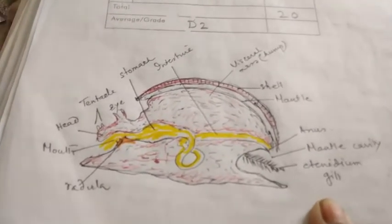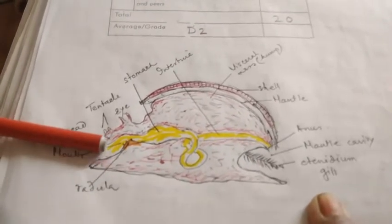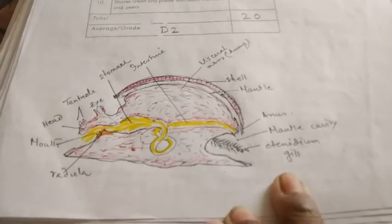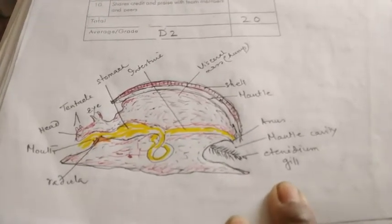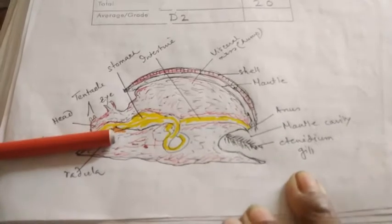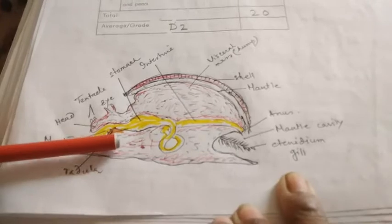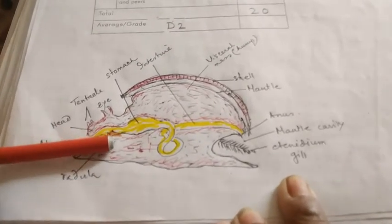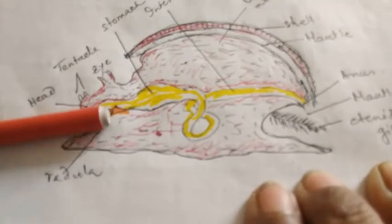Now digestive tract, you can see here it opens in the mouth and ends, it's a complete digestive tract. This mouth contains a very unique feature, a rasping organ called radula. You can see here the opening of the mouth which contains a rasping organ called radula with chitinous teeth. This radula contains very fine chitinous teeth.